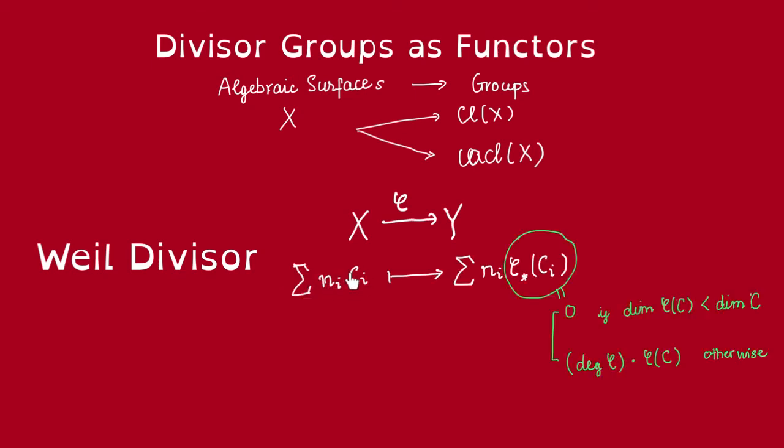If we cannot do pullback, we'll do push-forward. Given a Weil divisor, we can define its push-forward in the following way. For each of these curves c_i, we can define the push-forward of c_i. If the image of c_i is a smaller dimension—means this collapsed—then this is no longer a divisor, not a prime divisor, so we will just say its push-forward is 0. Otherwise, that means the image stays the same dimension as the dimension of c.